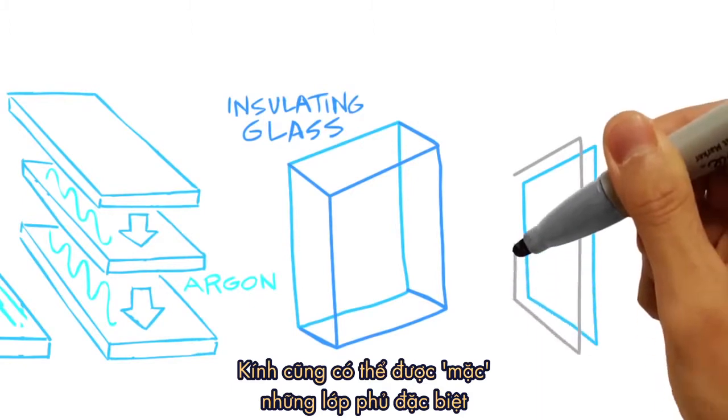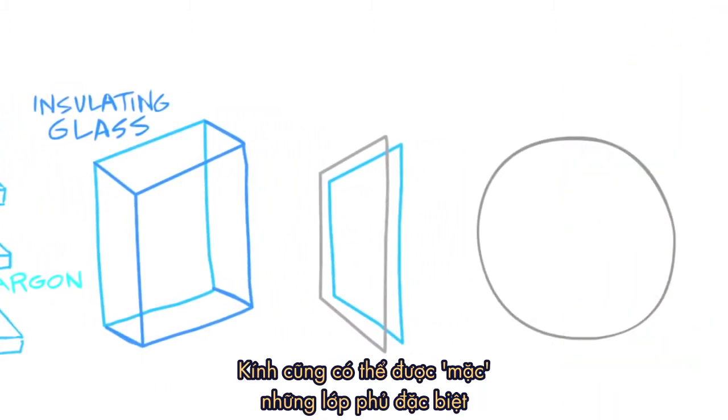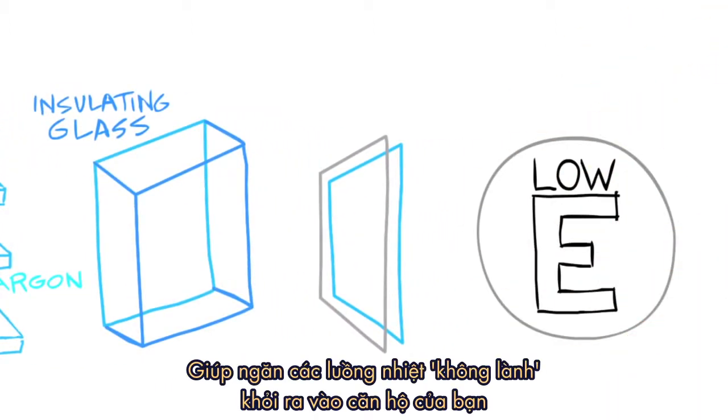The glass might also include an application of special metallic coatings called low-E coatings that reduce unwanted heat transfer in and out of your home.